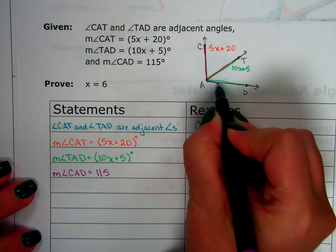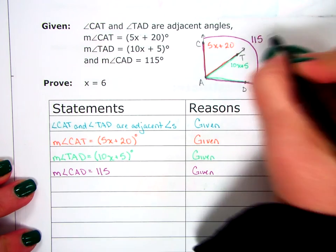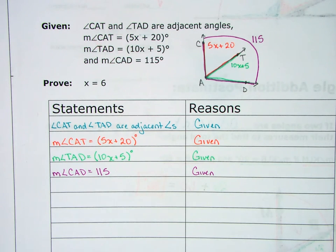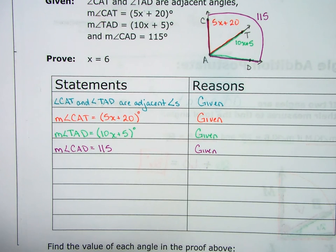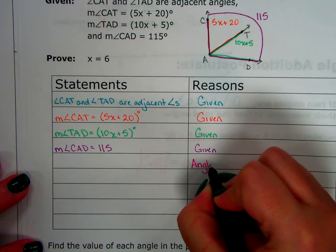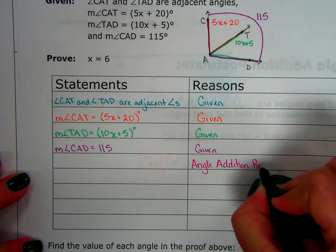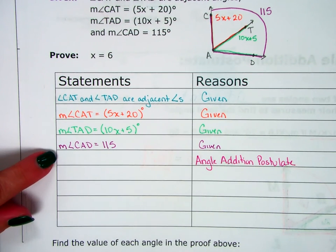And I have one more given I can add if you want to put all your givens right at the beginning. We could start doing other stuff right now, but I have one more given. I'm going to go ahead and put it. The measure of angle C-A-D equals 115. C-A-D is 115. All right. Any ideas what I should do next? I haven't written an equation to do substitution yet. I have to write an equation to substitute into before I can substitute. The postulate. The postulate. Angle addition postulate.